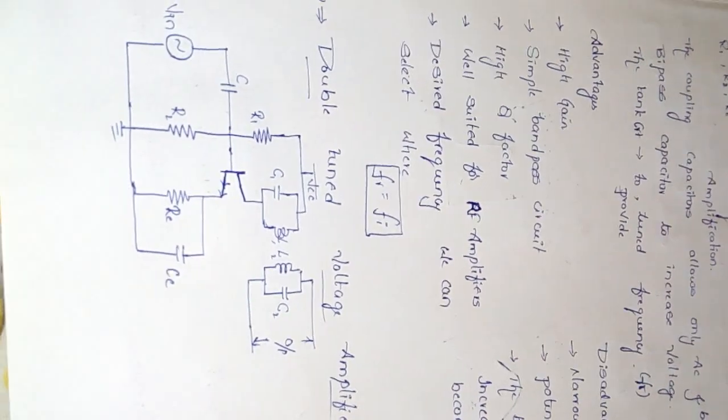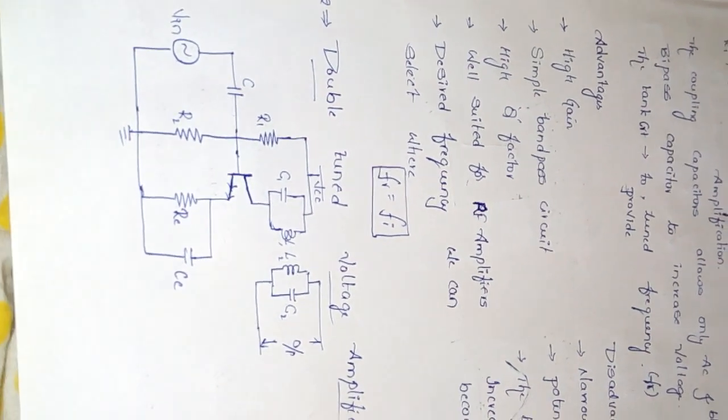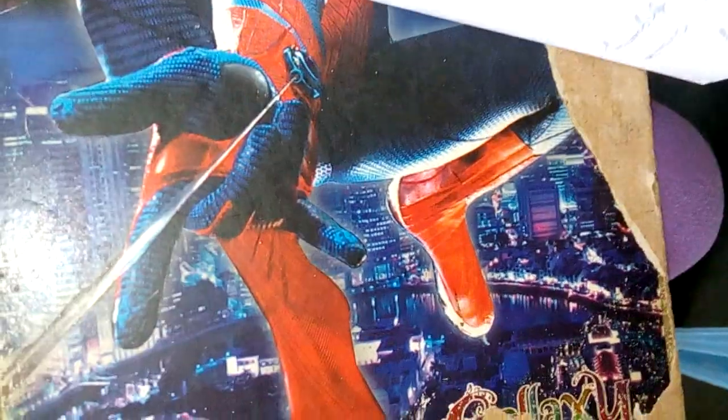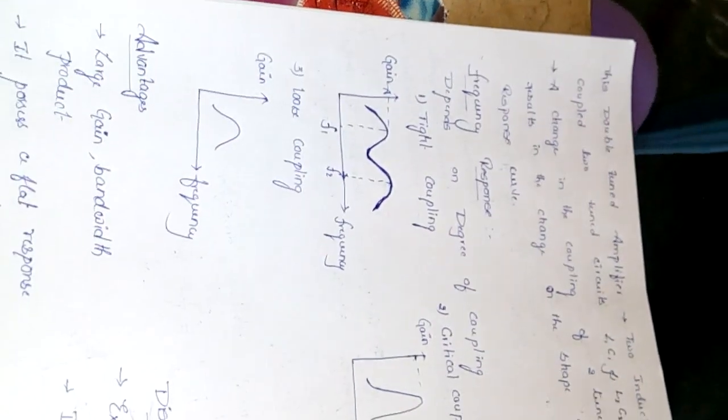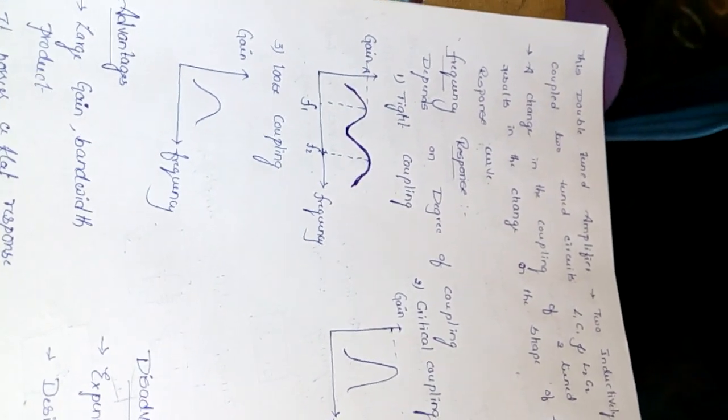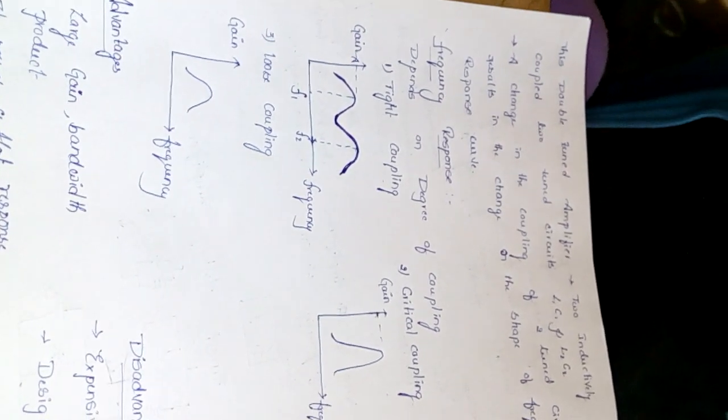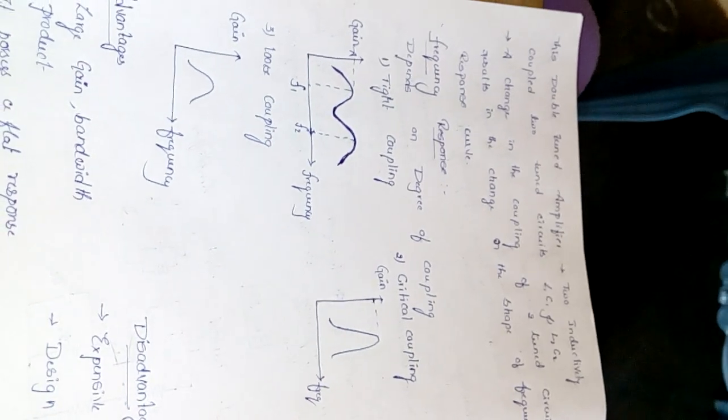In double tune amplifier we are using two LC circuits: L1 C1 and L2 C2. This double tune amplifier has two inductively coupled tuned circuits L1 C1 and L2 C2. A change in the coupling of two circuits results in change in the shape of the frequency response curve.